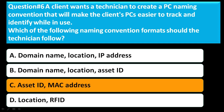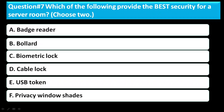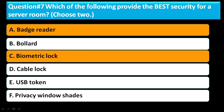Question 7: Which of the following provides the best security for a server room? Choose two. Option A: badge reader. Option B: bollard. Option C: biometric lock. Option D: cable lock. Option E: USB token. Option F: privacy window shades. The correct answer is A and C — badge reader and biometric lock.